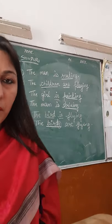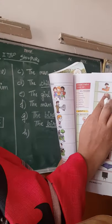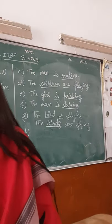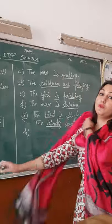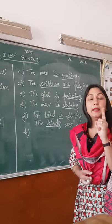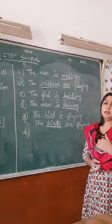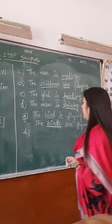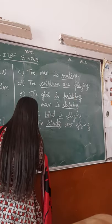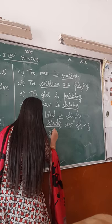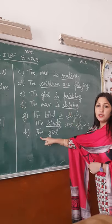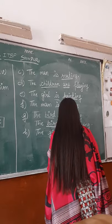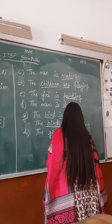Now in the next picture, what are you seeing? There is a girl who is sitting on a bench and she is writing something. A girl is writing something. The girl is single — how many girls are there? Only one girl is there, so you will write 'the girl is writing.' T-H-E, G-I-R-L, is writing.